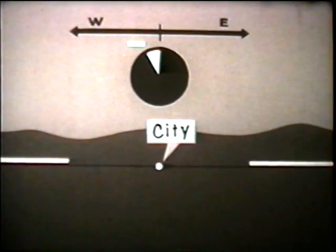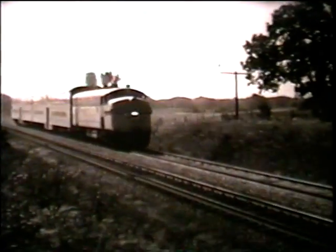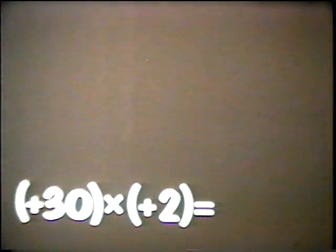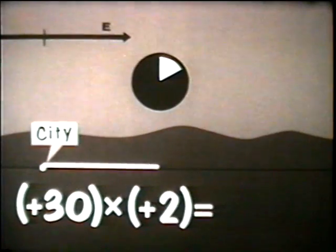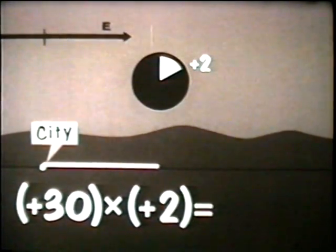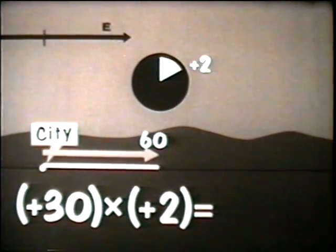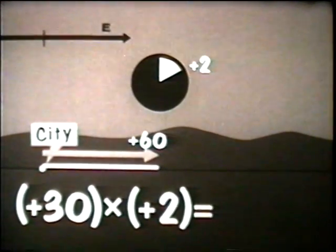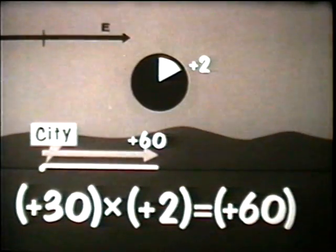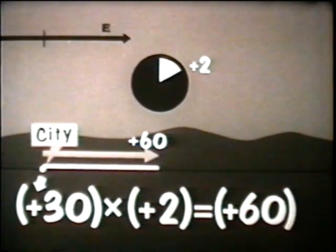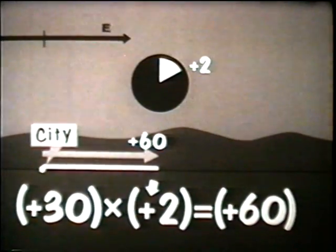The first problem deals with just positive numbers. A train going east has been averaging 30 miles per hour since it left the city two hours ago. What is its position? The 30 and 2 are both positive because speed is to the east and time is hours after departure. The train has been traveling east at 30 miles per hour for two hours, so it is 60 miles east of the city. So positive 30 times positive 2 equals positive 60. A positive number multiplied by a positive number equals a positive number.